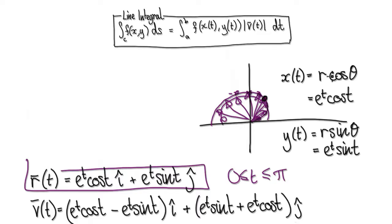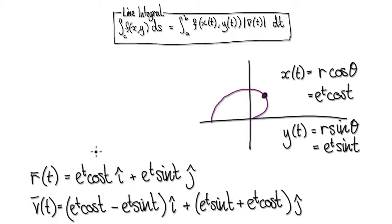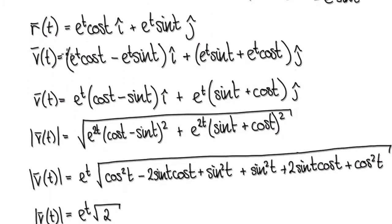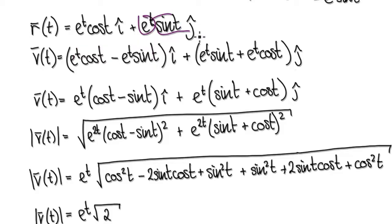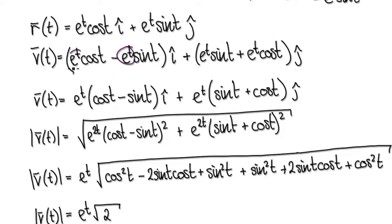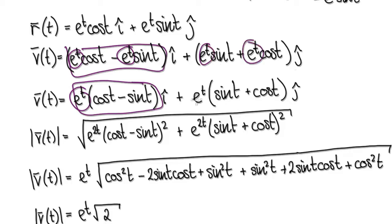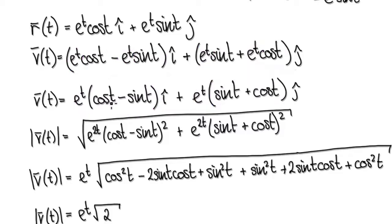We need to work out the speed, so once we have the position vector we differentiate it once to get the velocity vector. We have to differentiate using the product rule — differentiate the first term and so on — which then gives us the velocity vector. We can factor out e to the power of T to tidy it up.